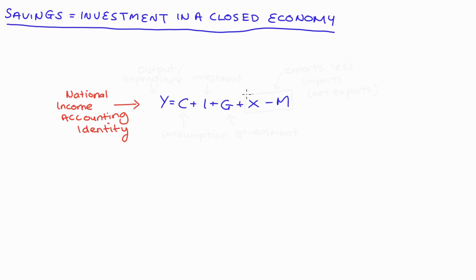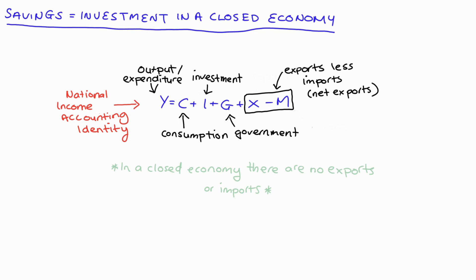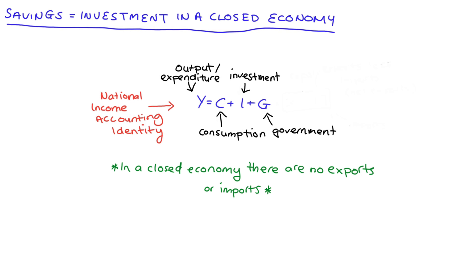So Y, which is our output or expenditure, is equal to C (consumption) plus I (investment) plus G (government spending) plus X minus M, which is net exports. Of course, in a closed economy there are no exports or imports, so X minus M just drops right out and we're left with Y equals C plus I plus G.